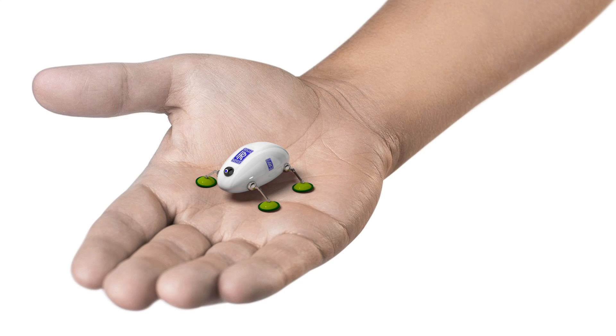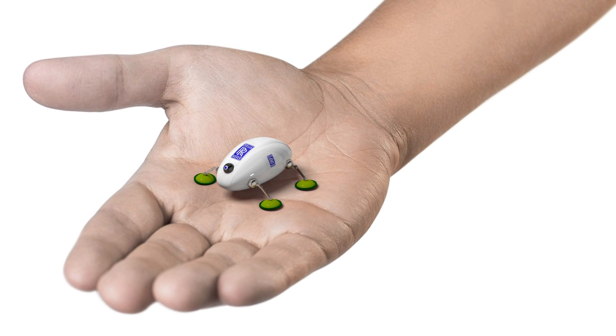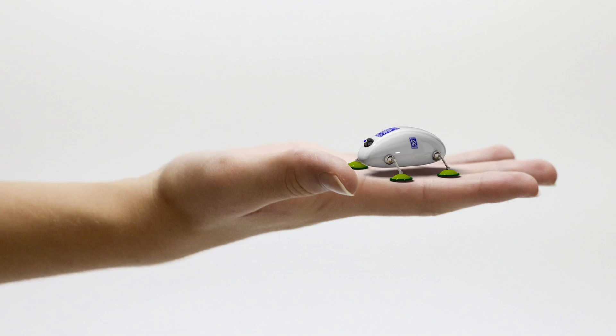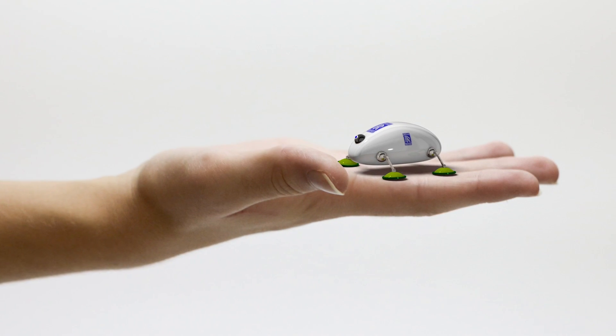At Farnborough Airshow this year we actually showed a prototype of this swarm bug and it was about the size of the palm of your hand which is fine and it works really well as a prototype of course it needs to be a lot smaller than that if it's going to go inside an engine.